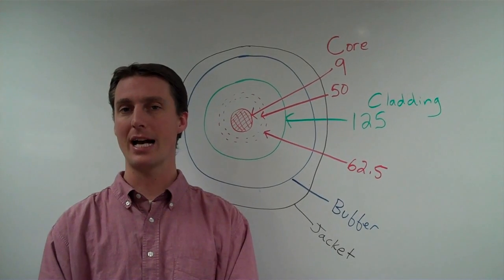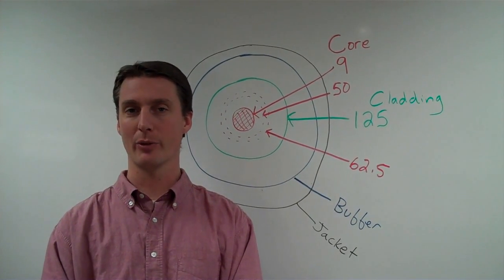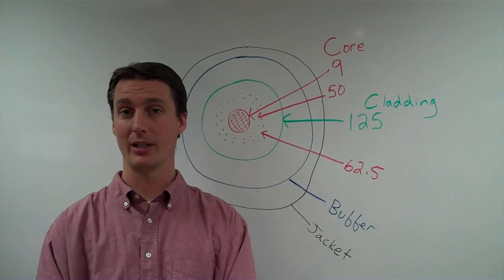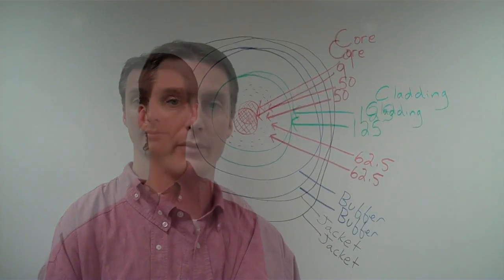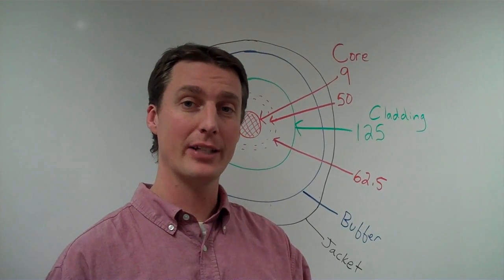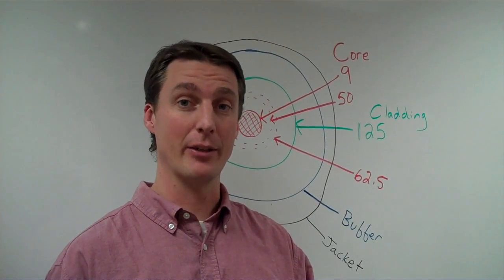There are three common core sizes: 9 over 125, 50 over 125, and 62.5 over 125. Each of those numbers stands for a measurement, and that measurement is in microns.